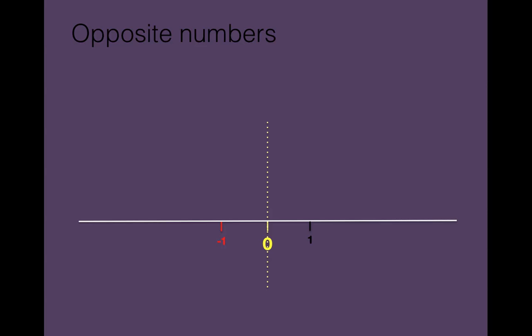Now the other thing you should know about opposite numbers is that they will have the same distance from 0. So if you look at the distance from 0 to positive 1, you'll see it's the same distance as 0 to negative 1, just in the opposite direction.